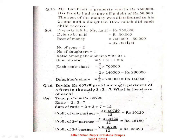The family will first distribute the amount — remaining is 7 lakh. Number of sons is 2 and number of daughters is 1. The ratio will be: first son 2, second son 2, and the daughter 1. So the ratio is 2:2:1.